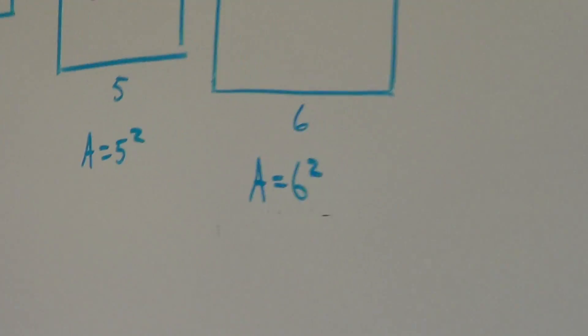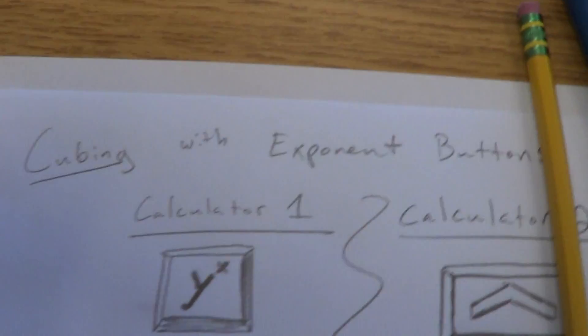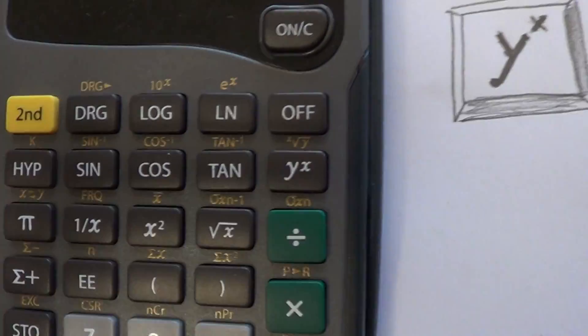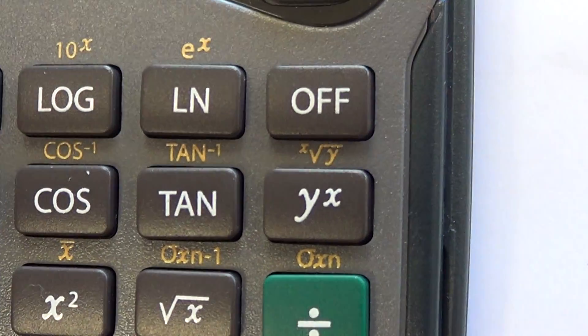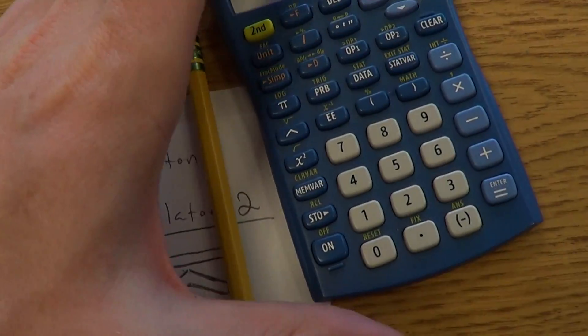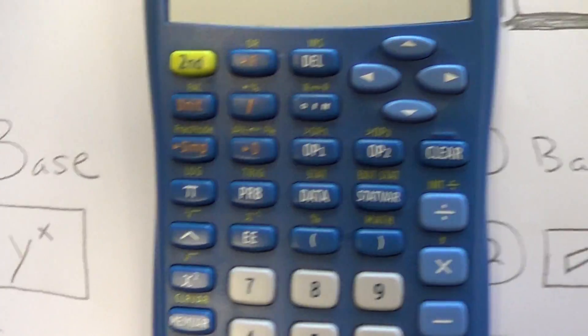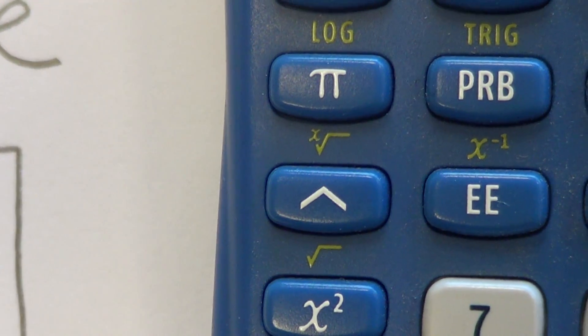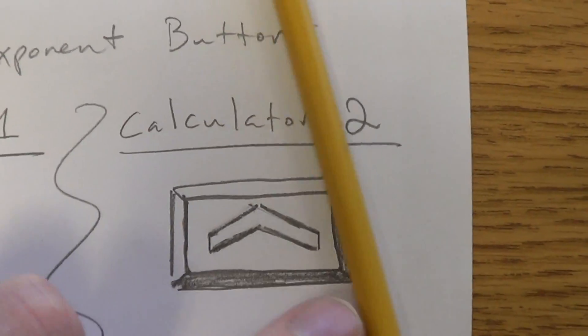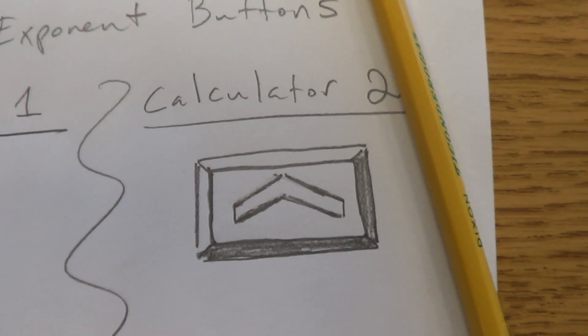So there's an exponent button on these calculators. For the class calculator, the exponent button is 'y to the x power' — see it right there? It's underneath the off button. That's the button you're going to use for cubing. On the other calculator, the exponent button doesn't say 'y to the x' — it's this little house button right here. That's your exponent button. So you have the 'y to the x' button for one calculator and the little house button for the other.